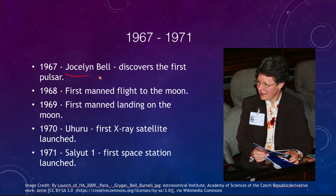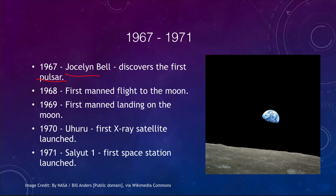Jocelyn Bell discovered the first pulsar in 1967 by detecting radio emissions. In 1968 — only seven years after the first man in orbit — we had the first manned flight to the moon with Apollo 8. The crew traveled to and around the moon and came back without landing, but they were the first people to see the Earth from the distance of the moon.